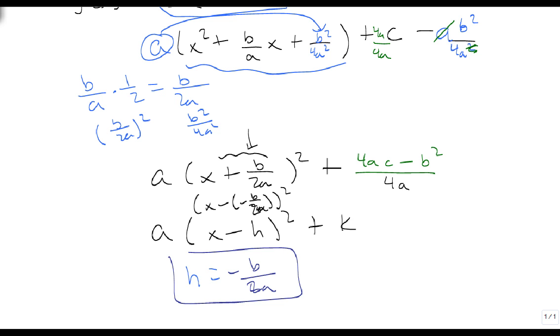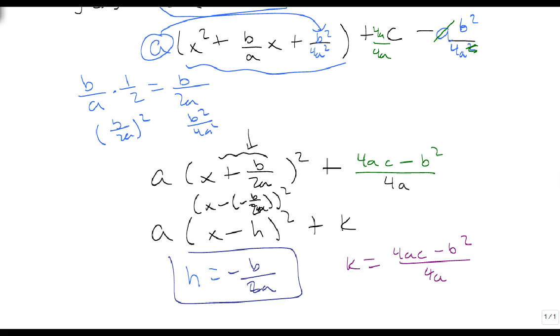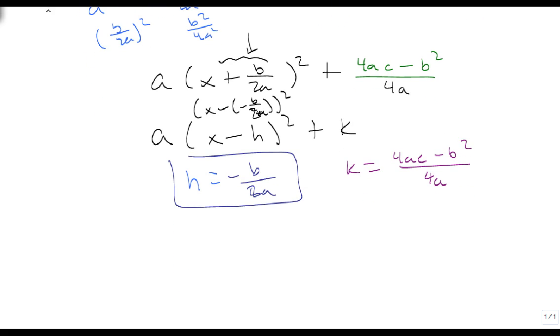Whatever our a, b, and c are, h is always -b/2a. Now the harder part is this k is (4ac - b²)/4a. And we don't like that nearly as much because that's harder to remember. So actually what we want to do is remember that this is a point (h, k), and all points (x, y) could also be written as (x, f(x)).